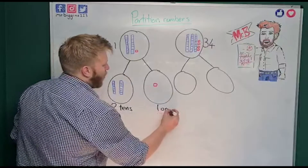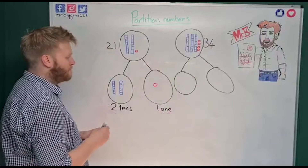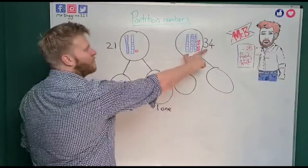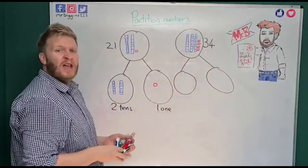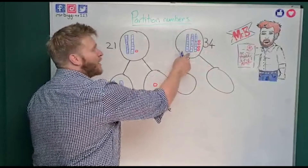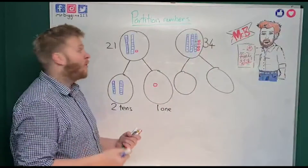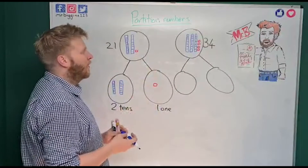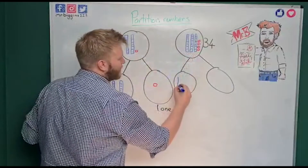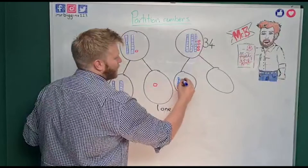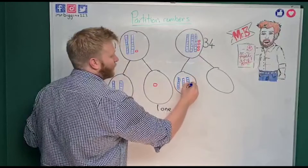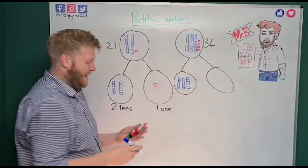Let's do the same with our 34. Have a little think — how many tens am I going to draw in here? Have a look at the number 34. Remember, if you're doing this at home or at school, you can either use physical tens and ones if you have them, or you can draw a picture of them. If you said three tens, you're right — look, I've got one, two, three tens — so I'll draw my three tens in there.